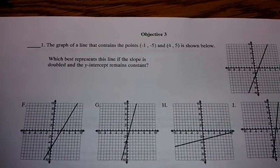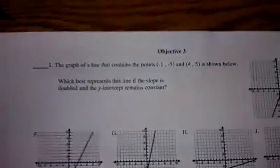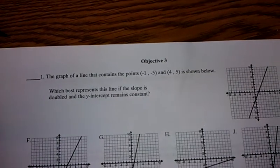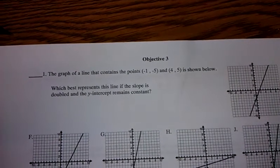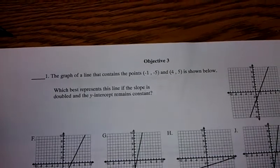This is for the TAKS objective 3. It says the graph of a line that contains the point negative 1, 5 and 4, 5 is shown below. Which best represents the line if the slope is doubled and the y-intercept remains constant?